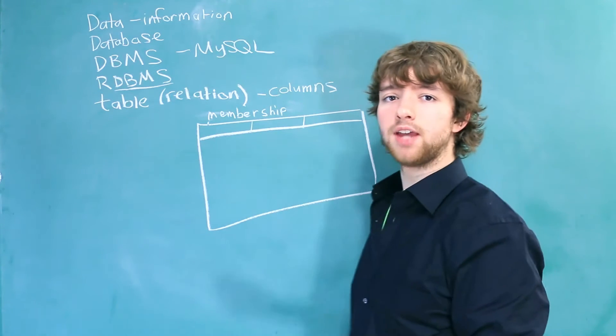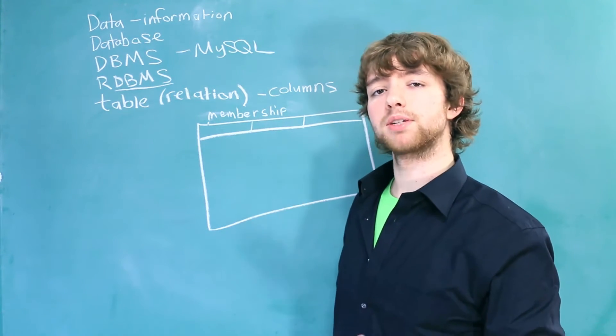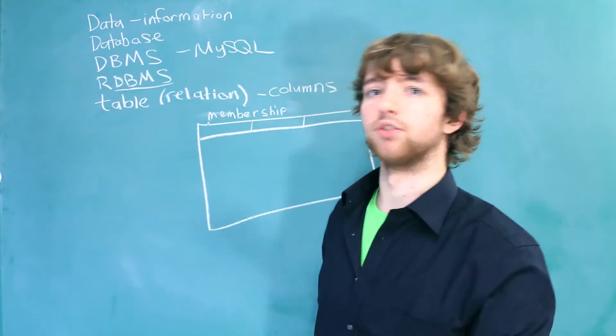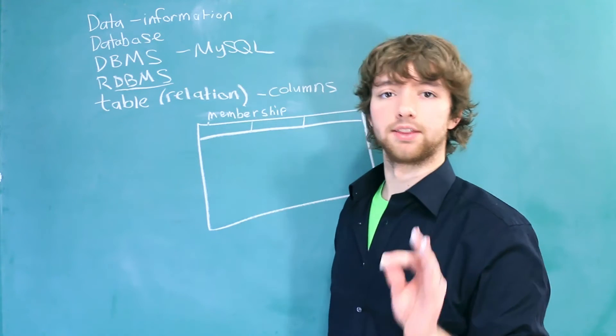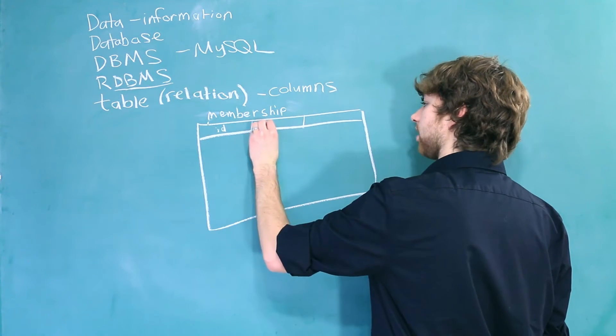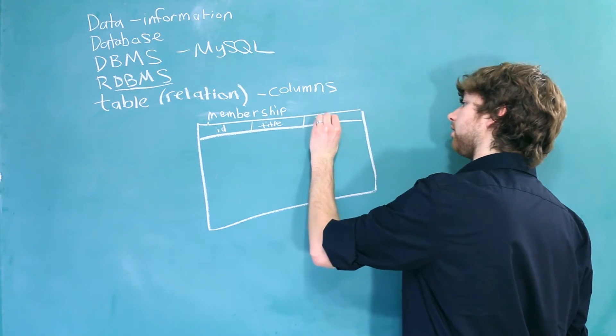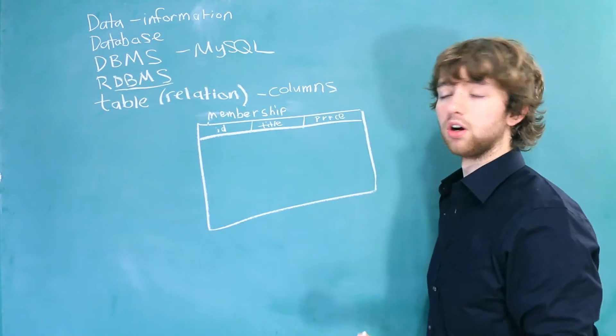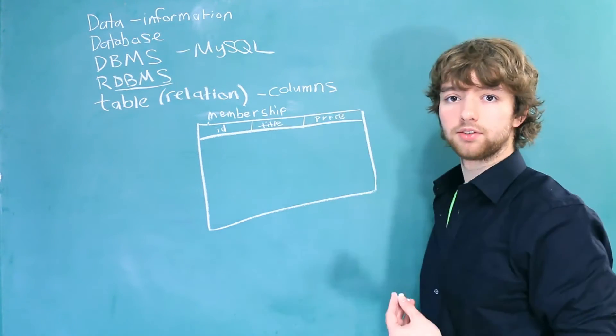We are essentially going to make a table that lists possible memberships for a gym or for a website or anything like that. So we might have an ID, a title, and then a price. So that's what the columns of this table are. ID, title, and price.